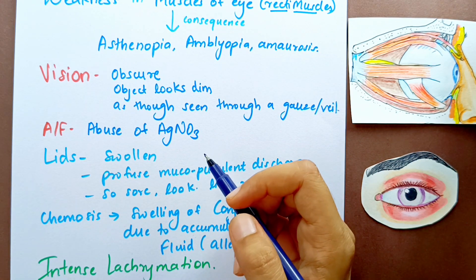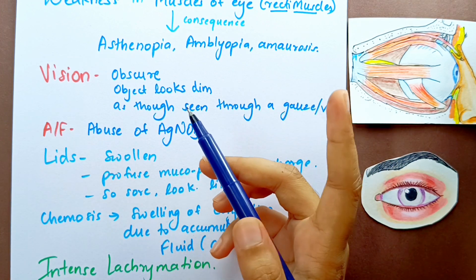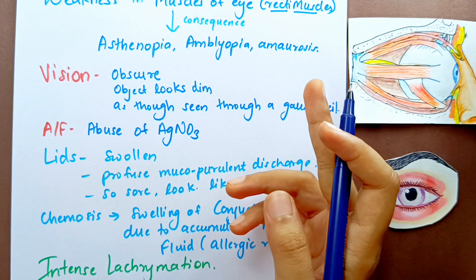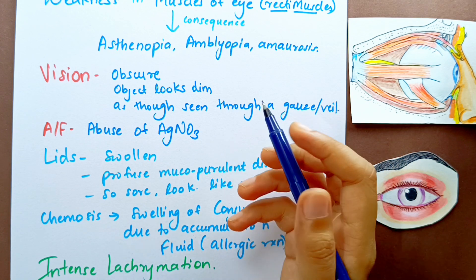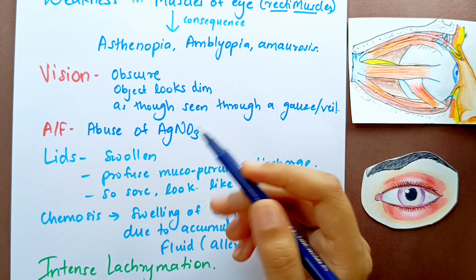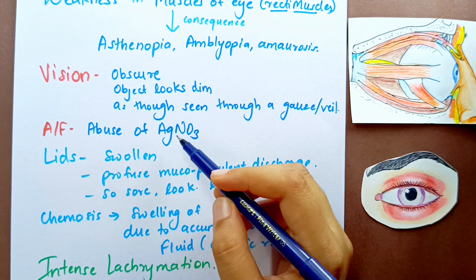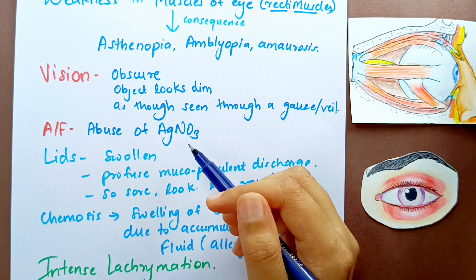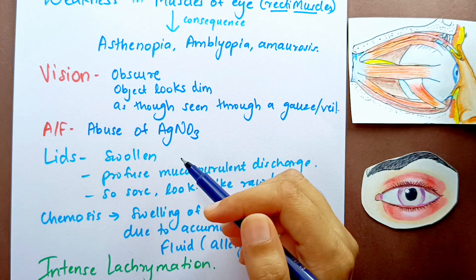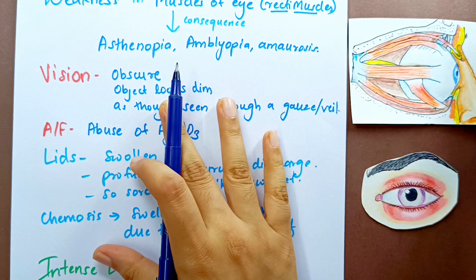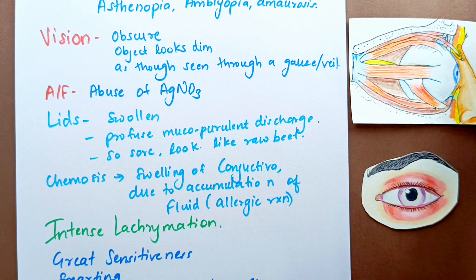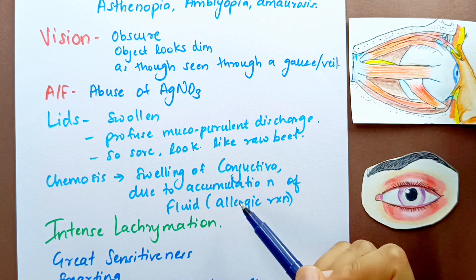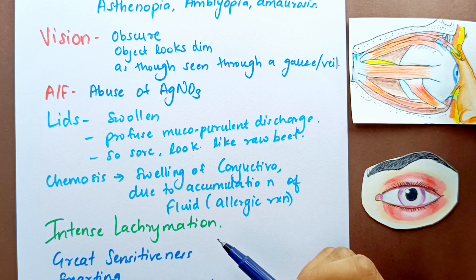There is also a condition called ailments from abuse of silver nitrate (AgNO3). Newborns' eyes are sometimes washed with 2% AgNO3 to protect against neonatal conjunctivitis caused by Neisseria gonorrhoeae. If such a baby grows up with vision-related issues matching Natrium Muriaticum symptoms, this remedy can be considered.